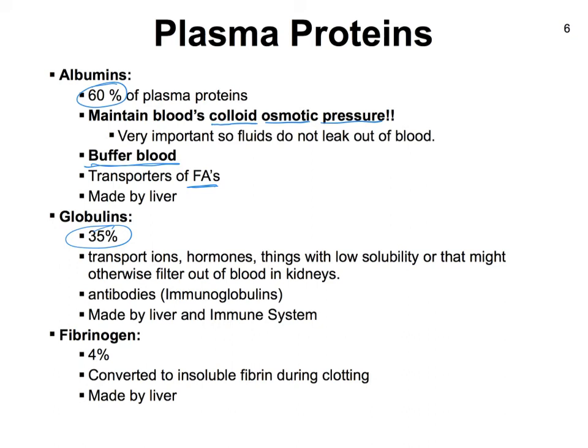The antibodies are made by plasma cells, which arise from lymphocytes. Finally, fibrinogen is a precursor molecule to fibrin — an inactive form that must be activated to become fibrin, the protein that makes up the strands during clot formation. Like the other plasma proteins, fibrinogen is formed by the liver, highlighting the crucial role the liver plays in producing important proteins and why liver failure leads to serious complications.